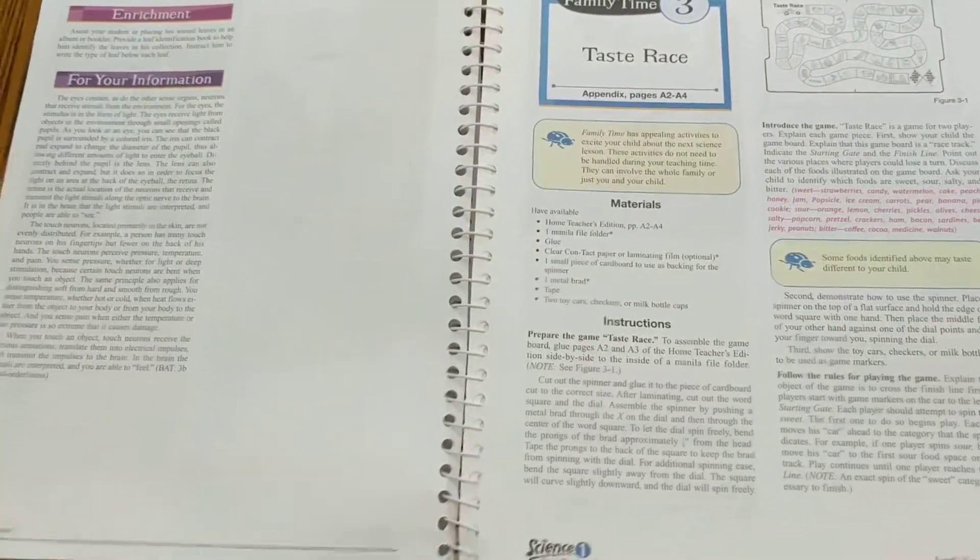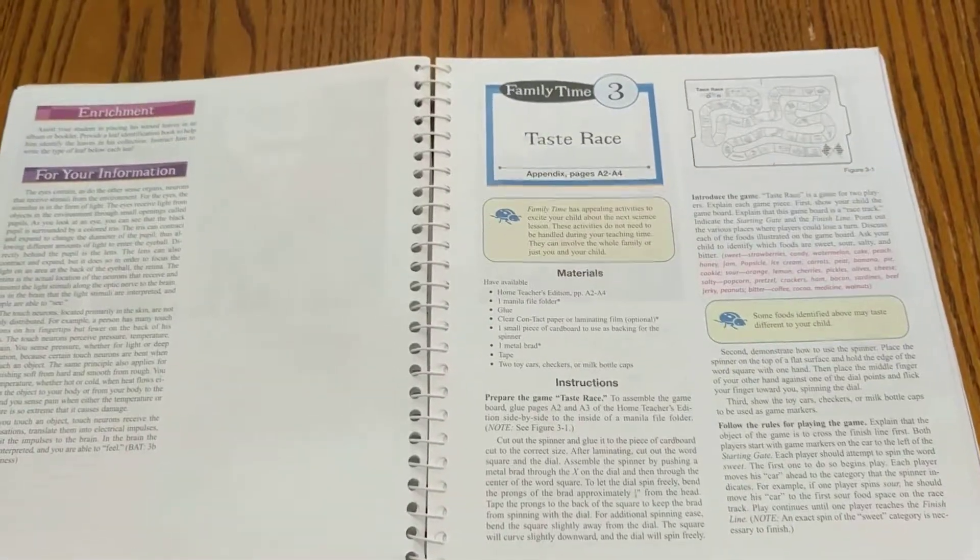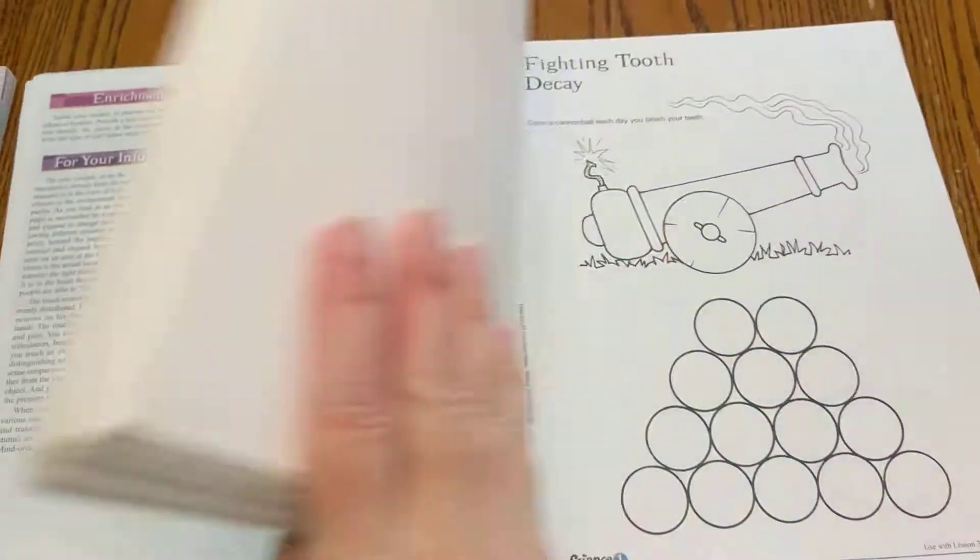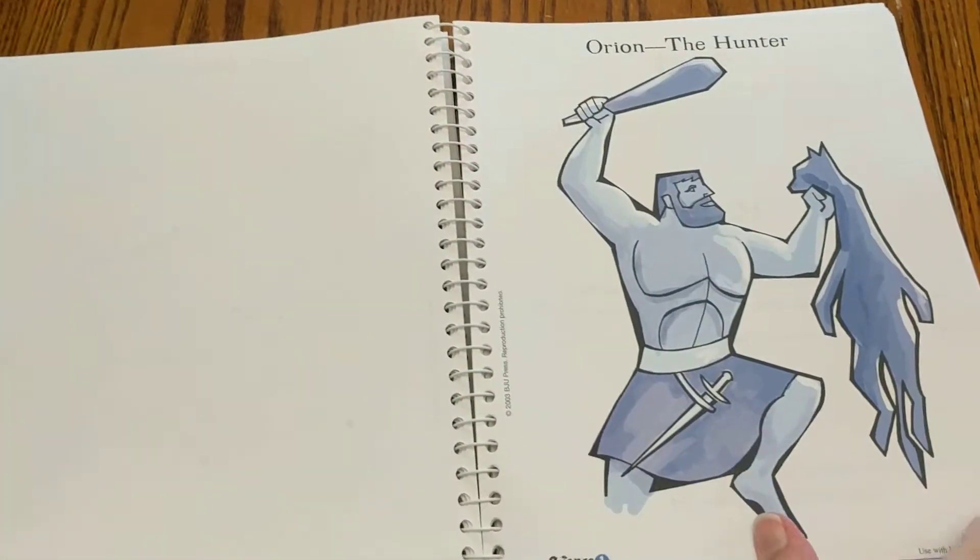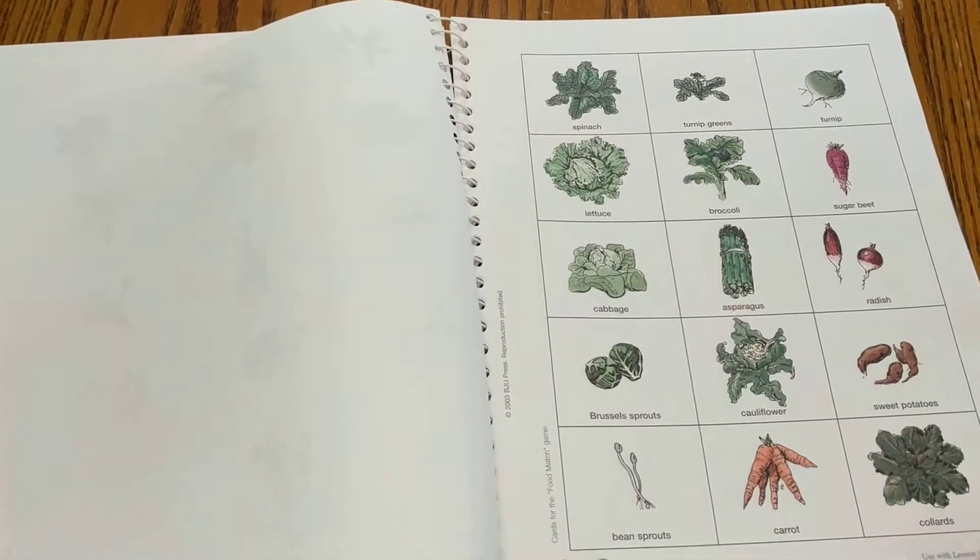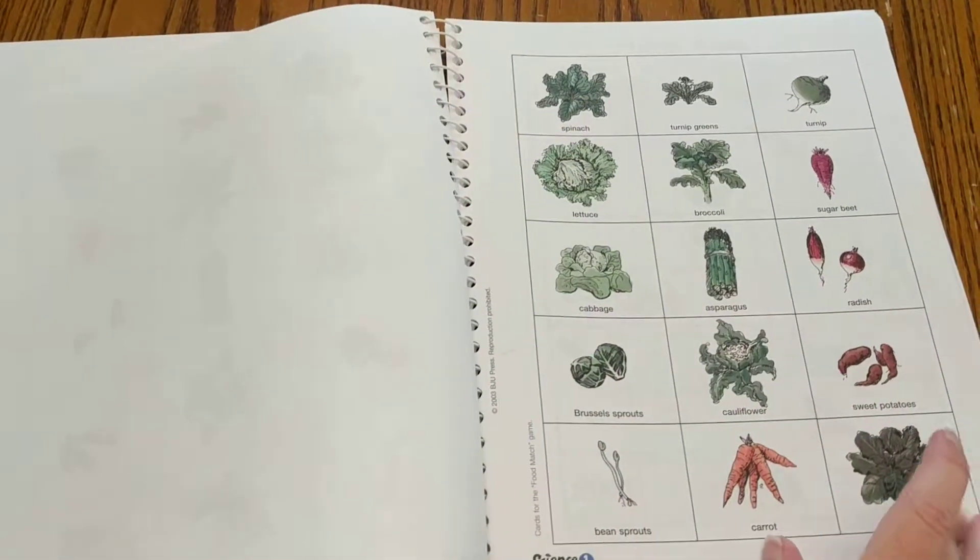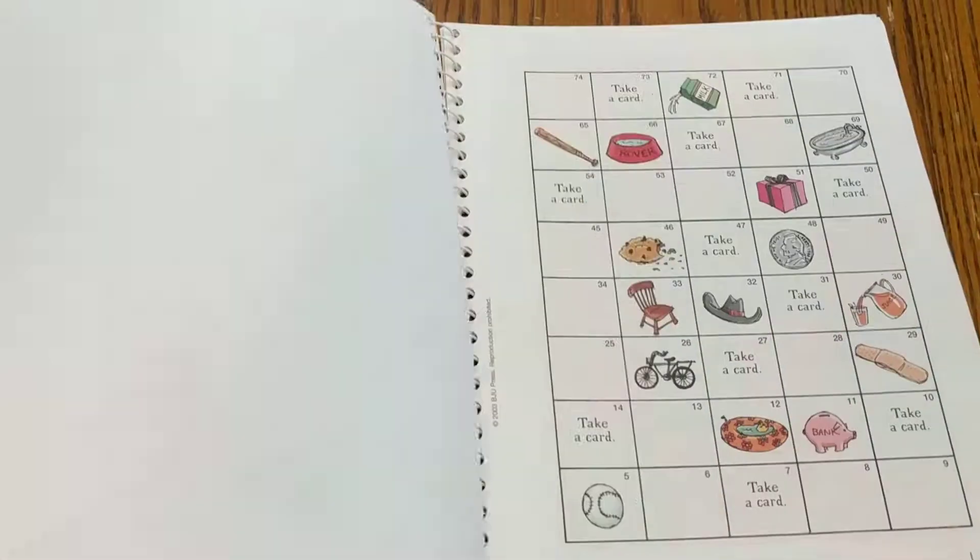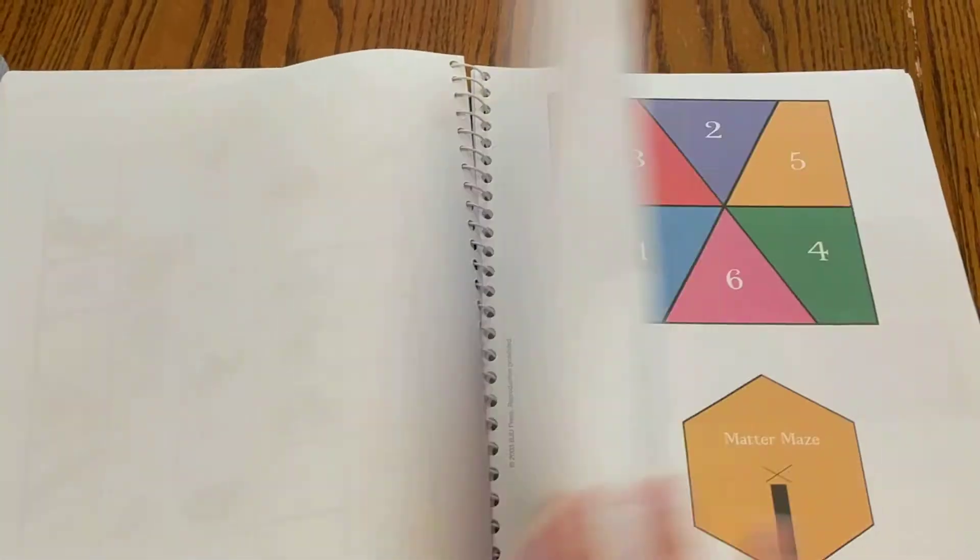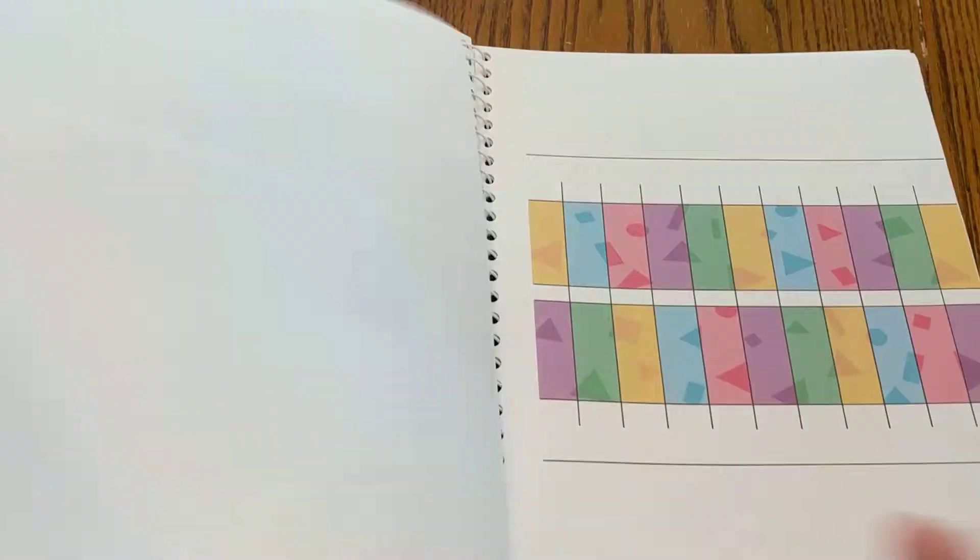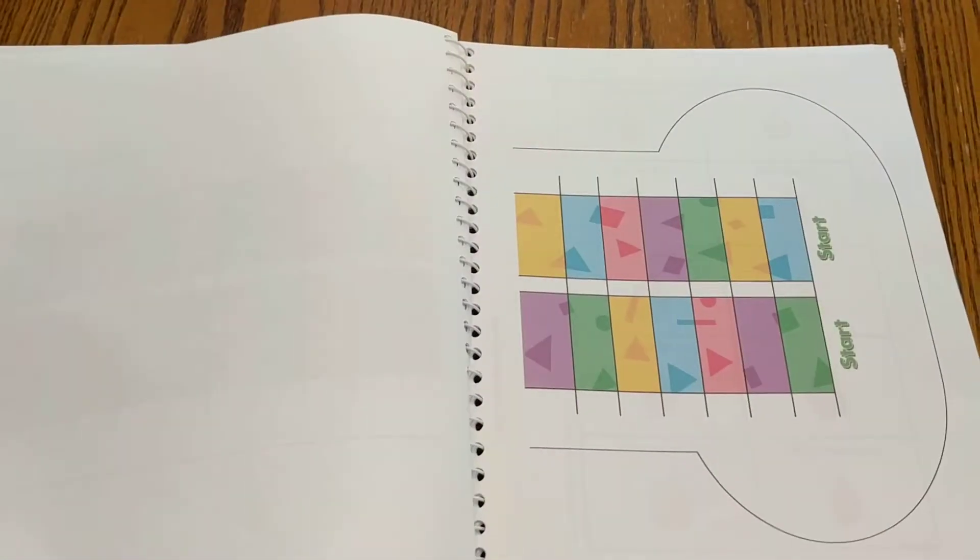In the back, there are also plenty of printables. I wanted to show you the tooth game because I thought it was really cute. There are plenty of printable hands-on games. This is a matching game that they play when they're learning about seeds. It's a maze game that they can play. Again, these are all reproducible games and things that they can do.